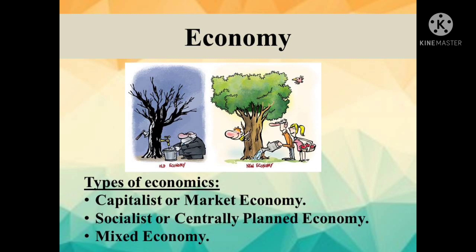Next, Economy. An economy is a system in which people earn their living by performing different economic activities like production, consumption, and investment. In other words, an economy refers to the whole collection of production units in an area or country by which people get their living. There are three types of economies: capitalist or market economy, socialist or centrally planned economy, and mixed economy.